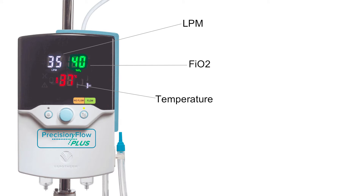There are really three settings on the high flow: the flow in liters per minute, the FiO2, and the temperature. I put this one up because I like their design — it's very easy, just three bright numbers. I think this is the Monty one. The Jacoby one is OptiFlow or something — so it's that other one.